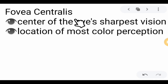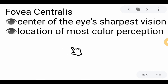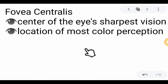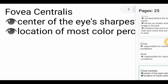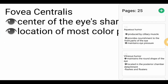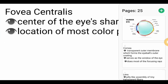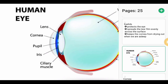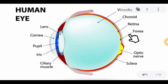Then we have the fovea centralis. It is the center of the eye's sharpest vision and the location of most color perception. Like a camera's focal point, this is the area where the most precise focusing occurs.